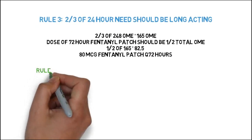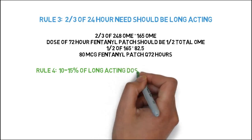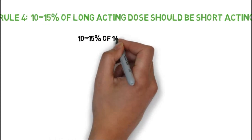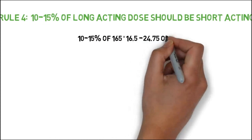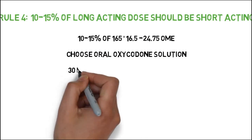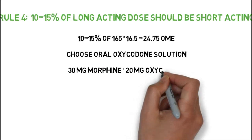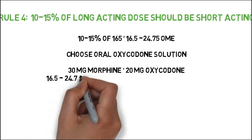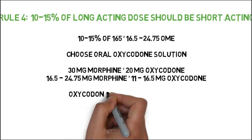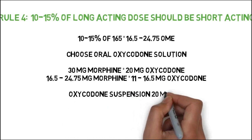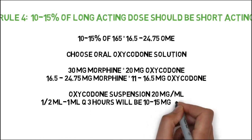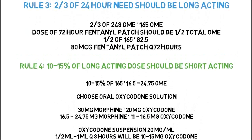For rule four, 10–15% of the long-acting dose should be available for short-acting breakthrough dosing. Ten to 15% of 165 is 16.5–24.75 OME. We choose a highly concentrated oral oxycodone solution. Since 30 mg of oral morphine is equivalent to 20 mg of oxycodone, the 16.5–24 mg morphine range equals 11–16.5 mg of oxycodone. The oxycodone suspension is available as 20 mg per milliliter, so we prescribe one-half to one milliliter every three hours, equaling 10–20 mg of oxycodone every three hours.